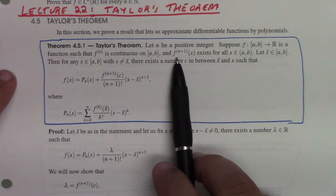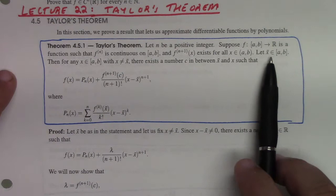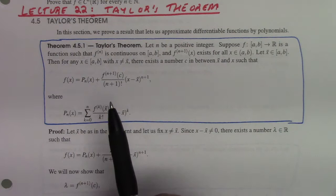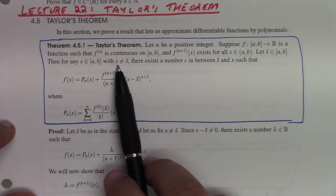The (n+1)th derivative exists on the open interval. We suppose x-bar is some point in the closed interval [a, b], and x is another point in [a, b]. Possibly x could equal a or b, but we're going to assume x is not equal to x-bar.